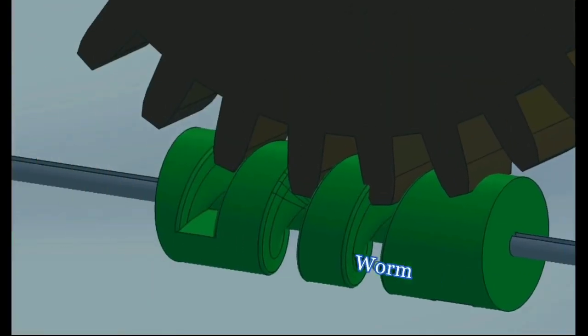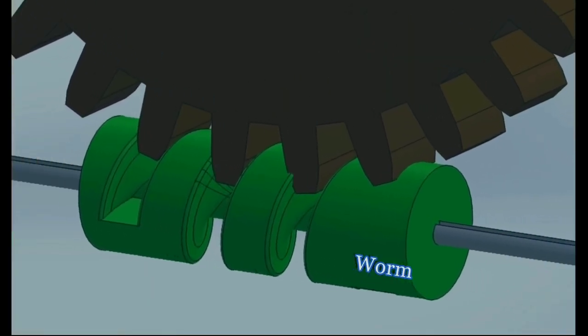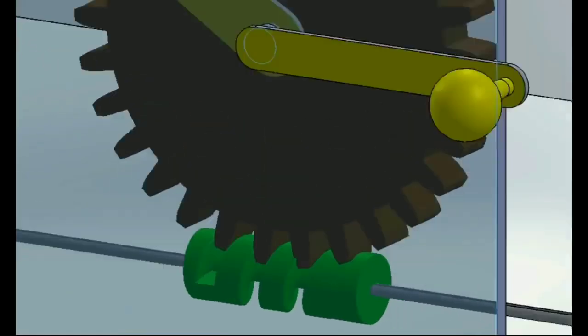The feed rod has a keyway throughout its length. A worm is mounted over it which slides along with the carriage and transmits the rotation to the worm gear.